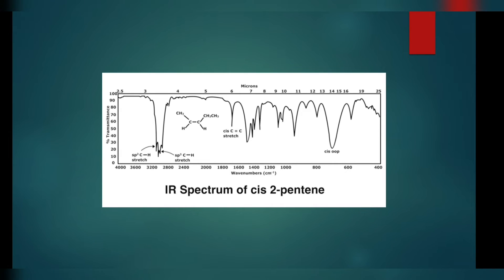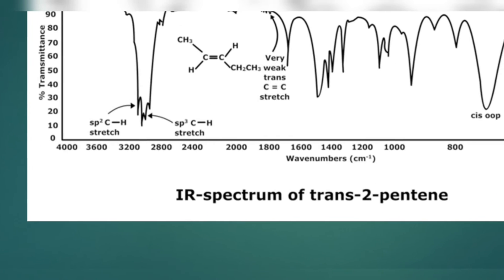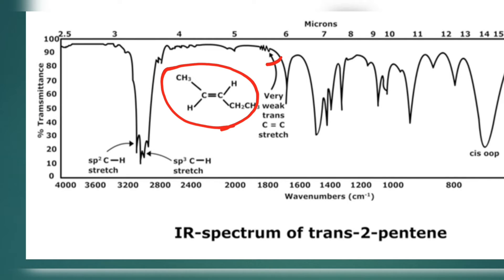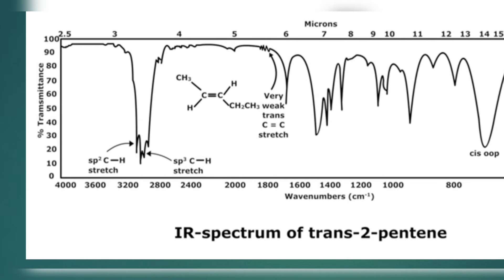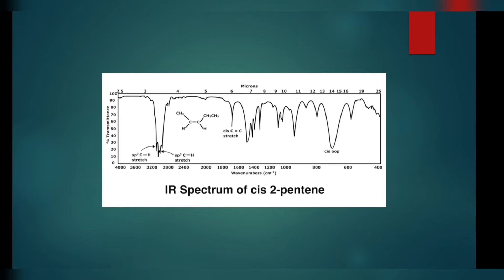The difference between the previous and the next example is just the cis and trans form. This is trans-2-pentene. The difference is only the presence of this disturbance here, which indicates the presence of a trans configuration — that our given 2-pentene is trans-2-pentene. This disturbance was not present in the previous cis example.